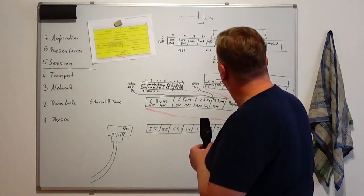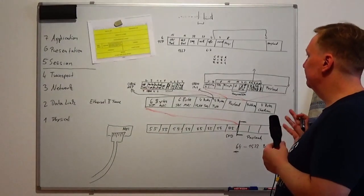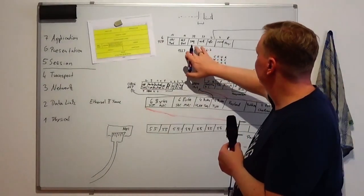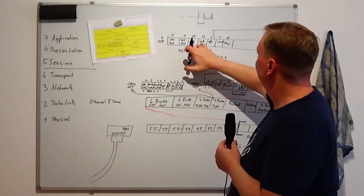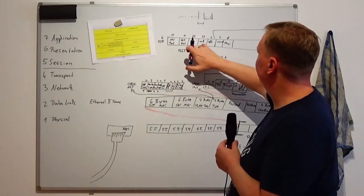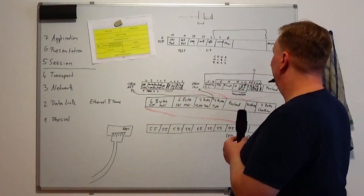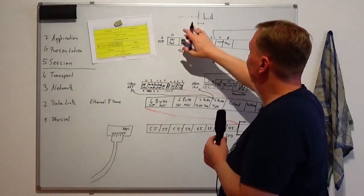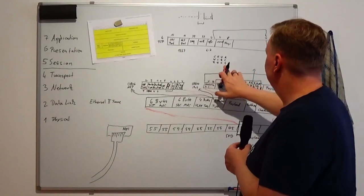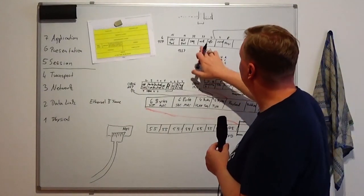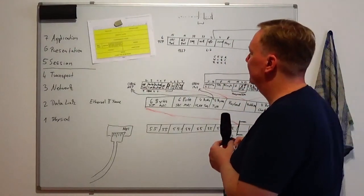Then we have the acknowledgement bit — a very important bit. As mentioned, you always send acknowledgement packets back to tell the other side 'I have received everything until this offset,' which also tells the other side it can remove that data from its buffer. The acknowledge bit is set for these packets, and it's also used in a few other places we'll talk about later.